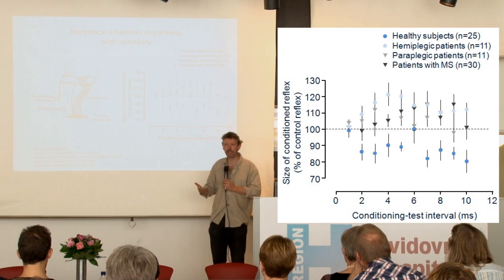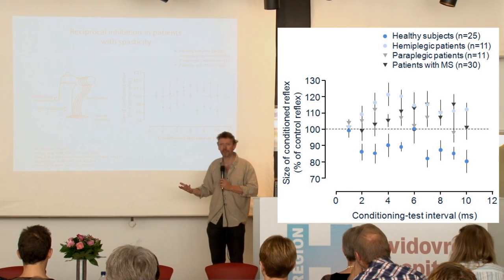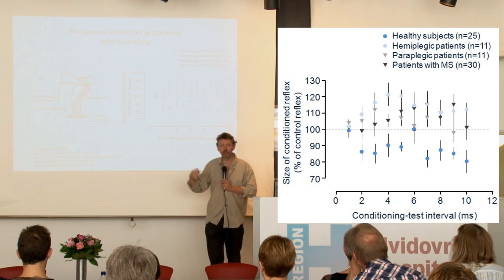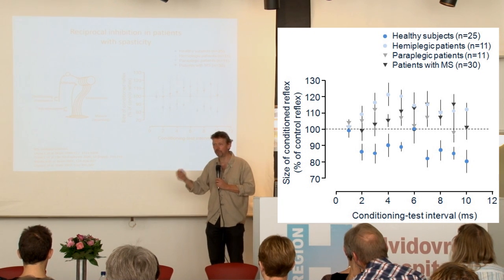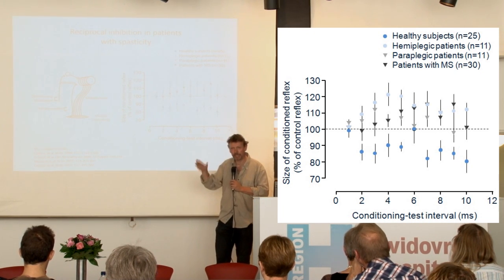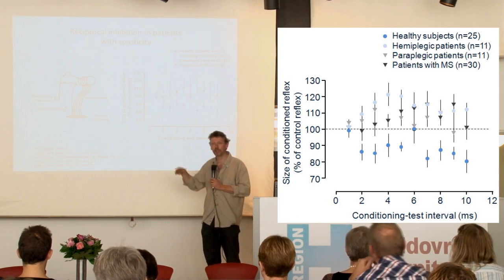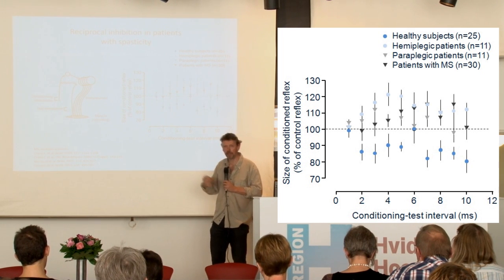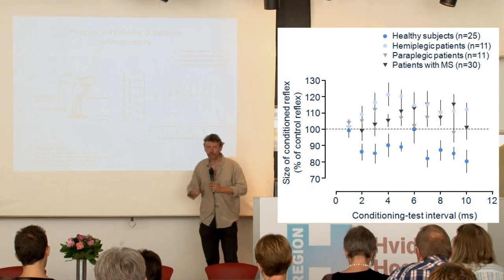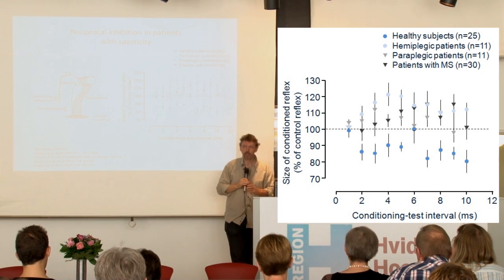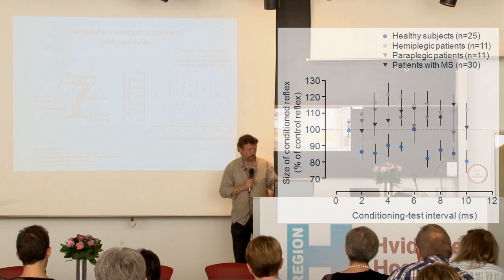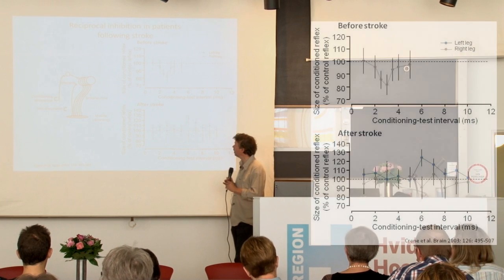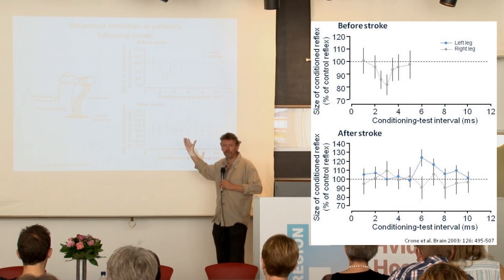And then you could say, well, who cares? They're sitting at rest, so it doesn't really matter. But one of the problems is that you also have large stretch reflexes because reciprocal inhibition contributes to dampening the reflexes. So one contributing factor to the large stretch reflexes you get in patients at rest is that reciprocal inhibition doesn't work. The functional significance of that is actually another story, which I will come back to. This is just to show that this is really the case — it's a unique finding, I would say.